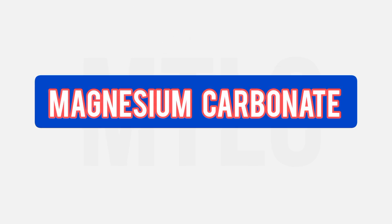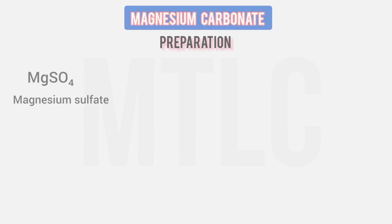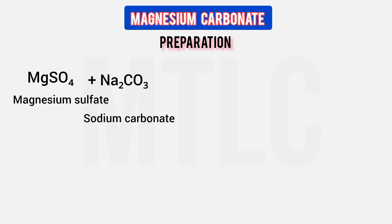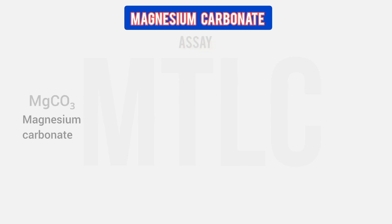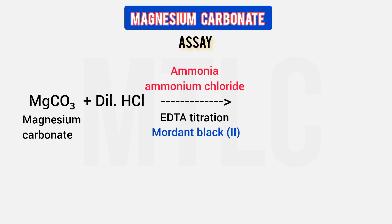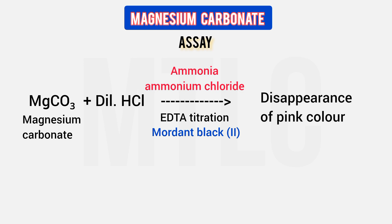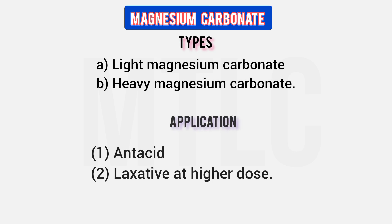Magnesium carbonate — formula MgCO3·Mg(OH)2·0.5H2O. Preparation: magnesium sulphate plus sodium carbonate gives magnesium carbonate plus sodium sulphate. For assay: dissolve in dilute hydrochloric acid, add ammonia and ammonium chloride buffer, add Mordant Black 2 indicator, titrate — endpoint is pink color. Heavy and light magnesium carbonate can be used as antacids; at higher doses, it acts as a laxative.